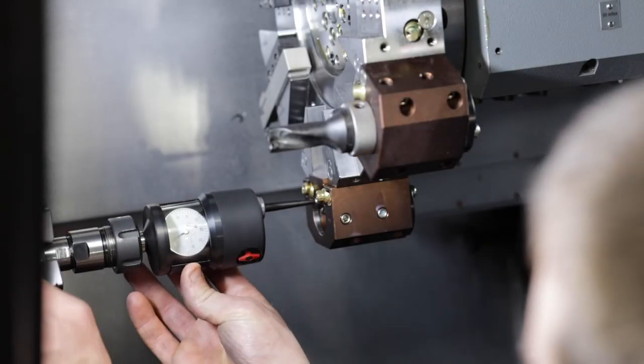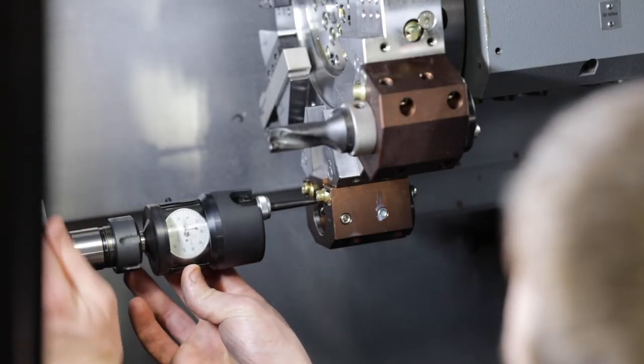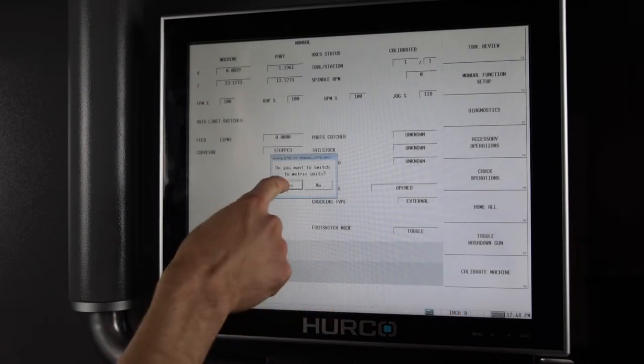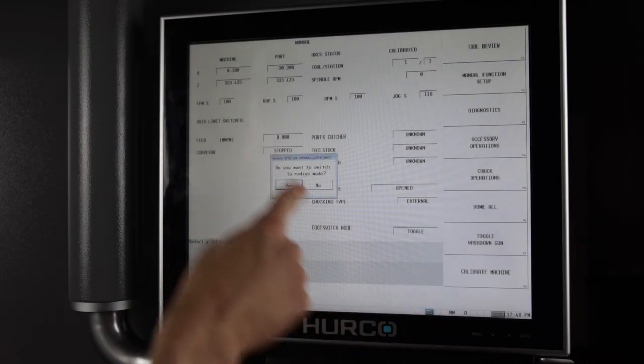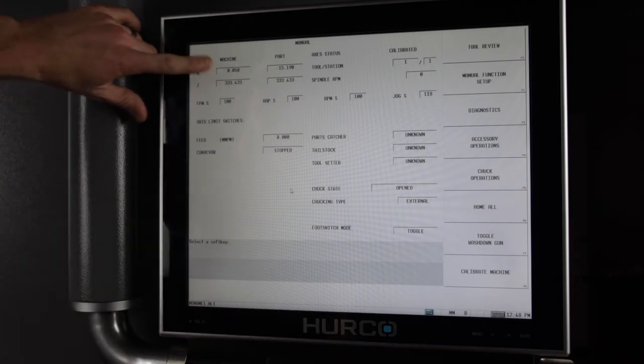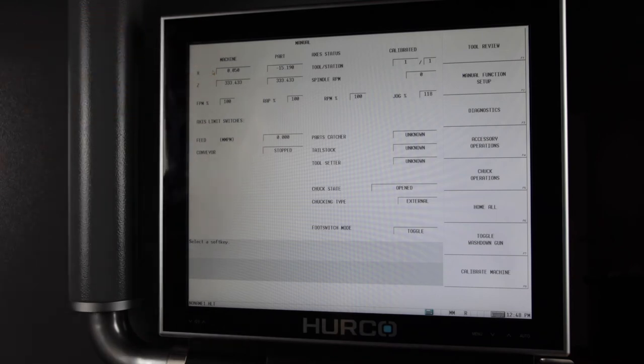After the turret is aligned, using a coax indicator, find the center of a boring block along the x-axis. Then switch to metric and radius mode in manual. Record or take a picture of the current x machine position. We will use this at a later time.